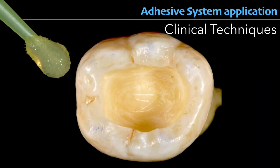Then apply the adhesive. In self-etch, the etchant and bond come in one tube. In total etch, you need a separate adhesive system. When applying adhesive, apply two to three coats to cover all the dentine tubules and lubricate all the dentine, leaving no area uncovered. Then cure for about 20 seconds. Before curing, dry it slightly so you have a thin layer deposited on the tooth surface.